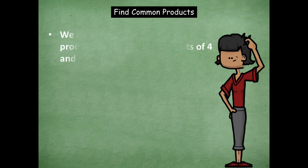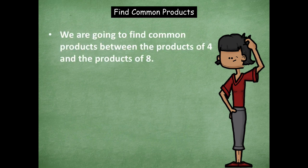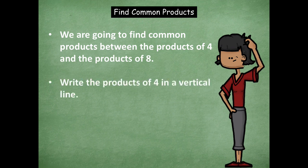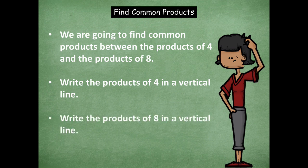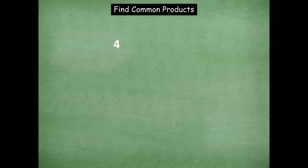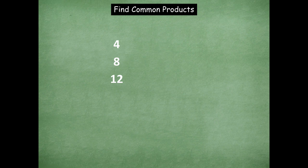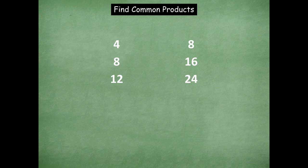Let's jump in and get started with our common products. We're going to find common products between the products of four and the products of eight. Write the products of four in a vertical line on the left hand side of your paper, and write the products of eight in a vertical line on the right hand side. For example, on the left you'd have four, eight, twelve — leave some space on the left for later. On the right you'd write eight, 16, and 24 — leave space in the middle and on the right for later. Go ahead and write the products of four from four to 40, and the products of eight to 80.